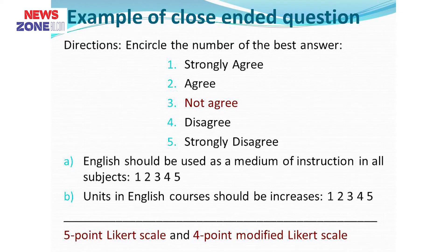This type of question set is known as a 5-point Likert scale. If we remove the middle option, that will be a 4-point Likert scale, in which we push the respondent to answer on either the agree side or the disagree side.